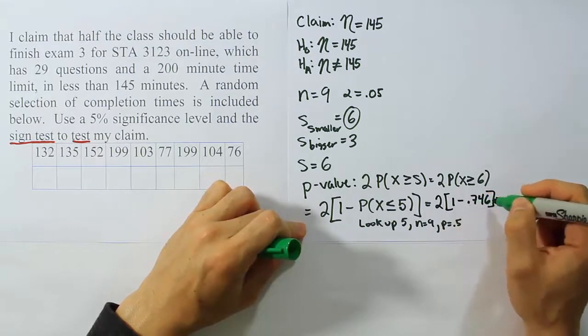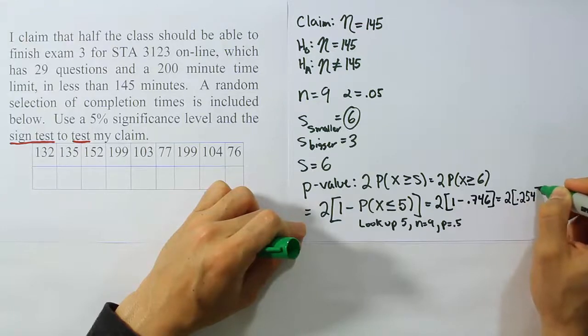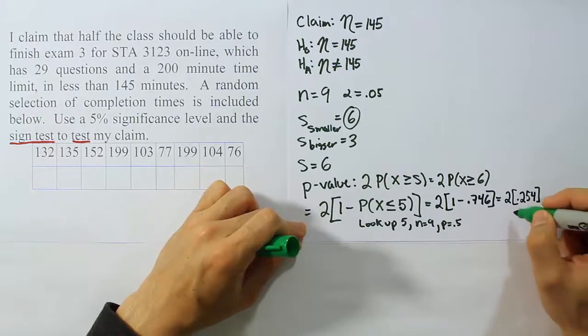So we'll have 2 times 1 minus 0.746. Okay, so 1 minus 0.746 is 0.254. So it'll be 2 times 0.254. Okay, and of course that's going to be 50.8%, or in other words 0.508.